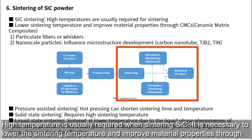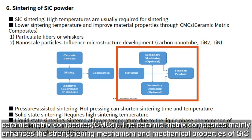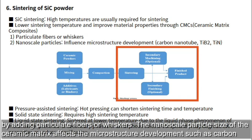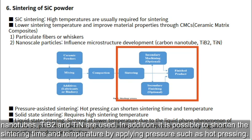High temperature is usually required when sintering SiC. It is necessary to lower the sintering temperature and improve material properties through ceramic matrix composites. Ceramic matrix composites mainly enhance the strengthening mechanism and mechanical properties of SiC by adding particulate fibers or whiskers. The nanoscale particle size affects the microstructure development; carbon nanotubes, TiB2, and TiN are used. Applying pressure such as hot pressing can also shorten sintering time and temperature.